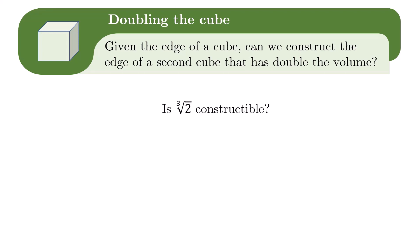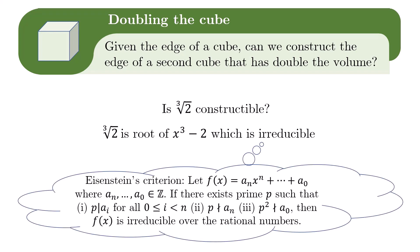This question is equivalent to asking whether the cube root of 2 is constructible. We can easily check that the cube root of 2 satisfies the polynomial x cubed minus 2, and this polynomial cannot be factored over the rationals. You can prove the latter using Eisenstein's criterion, whose statement I have put up here for reference. Anyway, since the degree is 3, which is not a power of 2, the answer to our question is a resounding NO.